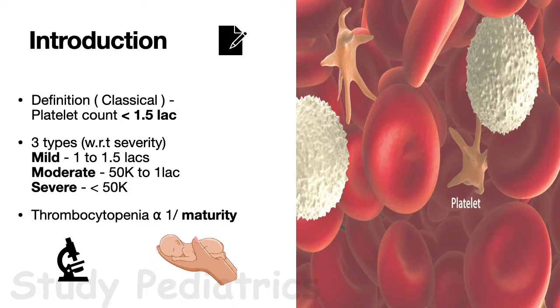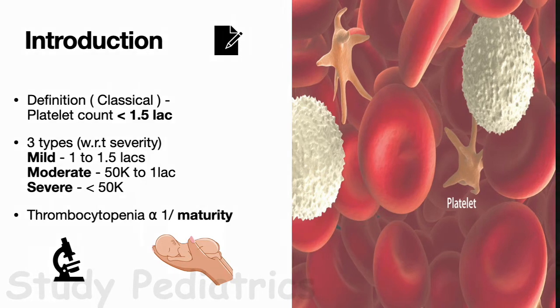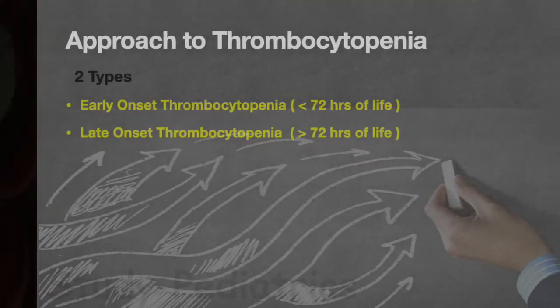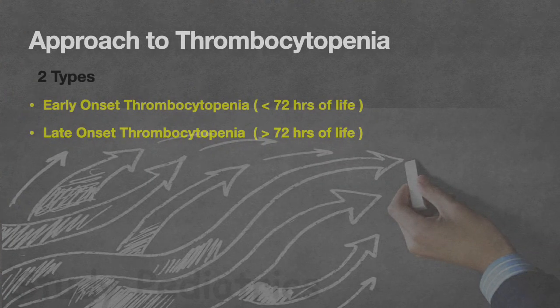Thrombocytopenia is inversely proportional to maturity. Thus, preterm infants have a higher chance of thrombocytopenia compared to term infants. Thrombocytopenia can be divided into two types based on onset: if it occurs within less than 72 hours, it is called early onset thrombocytopenia; if more than 72 hours, it is late onset thrombocytopenia.